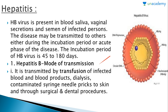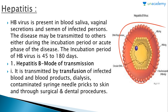Hepatitis B modes of transmission: it is transmitted by transfusion of infected blood and blood products, dialysis, contaminated syringe needles, pricks to skin, and through surgical and dental procedures. The hepatitis B virus contains a protein coat with circular DNA inside.